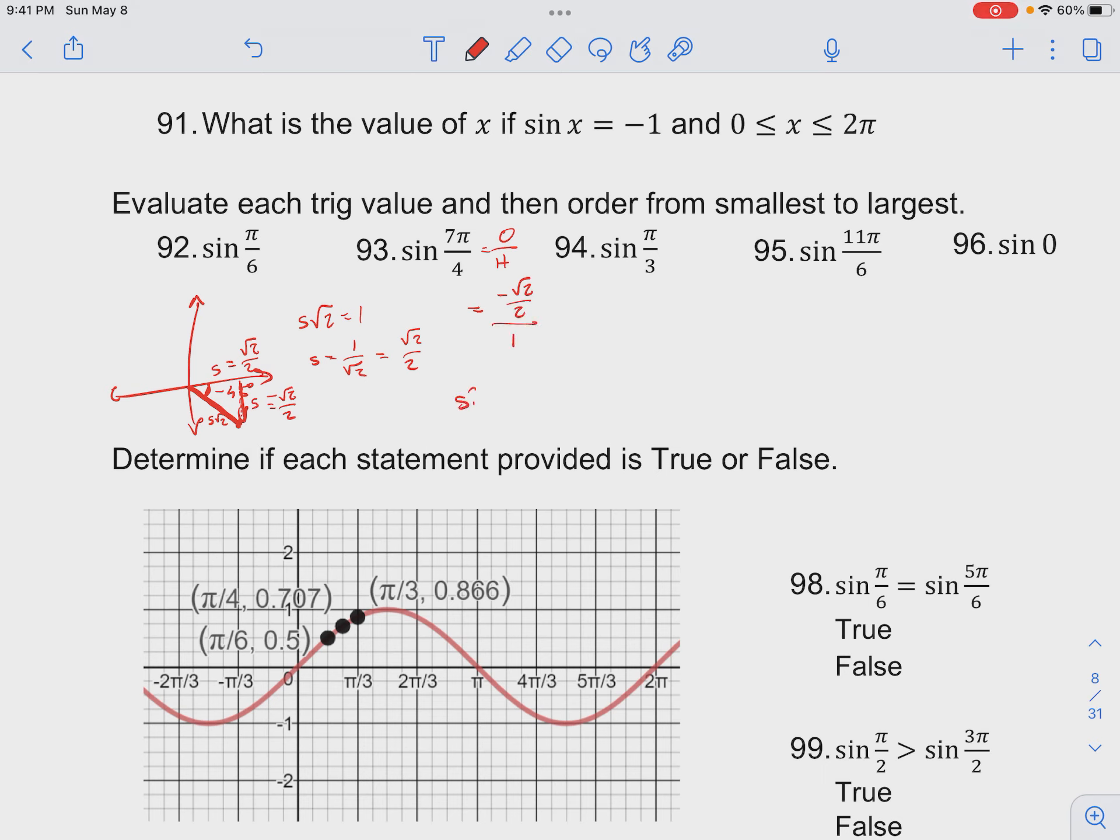So our sine of 7π over 4 is equal to negative √2 over 2.